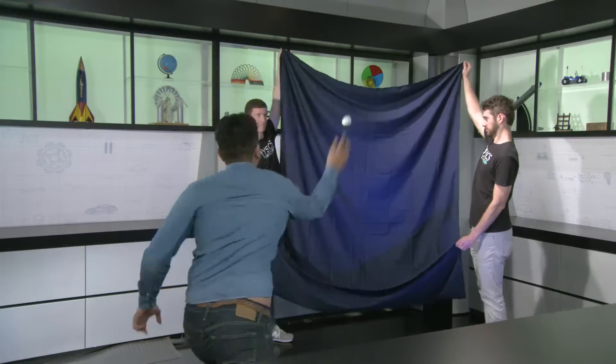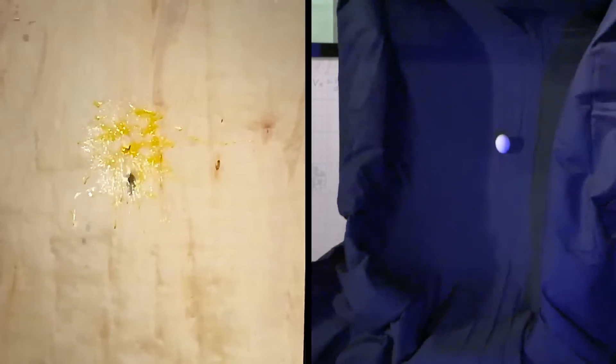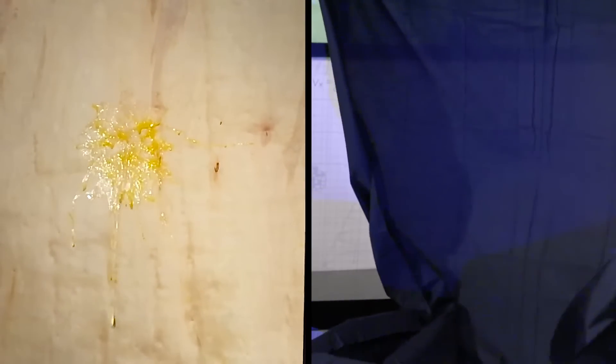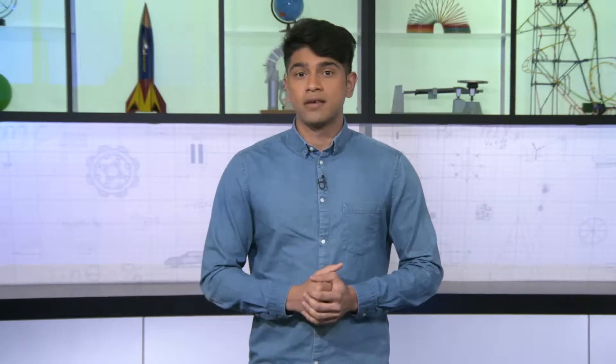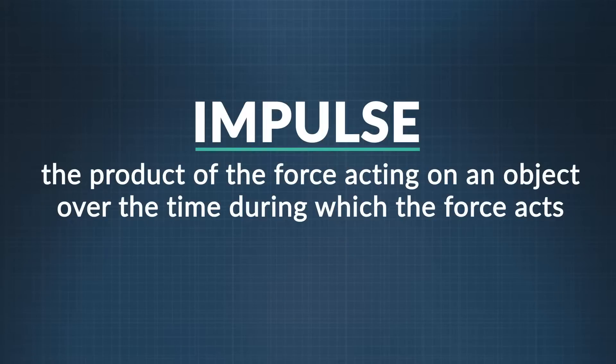Now that we know how to measure momentum, let's look at the physics of why the egg breaks against the wall and not the sheet. The sheet is softer, but we're looking for a way to quantify what's happening. In order to do that, we also need to know what impulse is. Impulse is the product of the force acting on an object over the time during which the force acts.